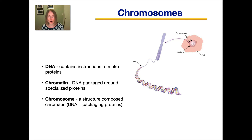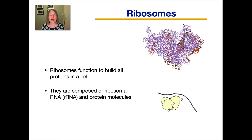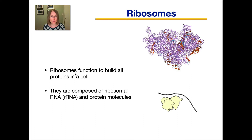So the DNA has to be packaged in a special way to fit into these tiny cells. The vocab word for this is chromatin — chromatin is when the DNA is packaged around specialized proteins. And a chromosome is a single structure composed of chromatin, the DNA and the packaging proteins. Ribosomes are special structures in all cells whose function is to build all the proteins in a cell. A ribosome is made up of molecules called ribosomal RNA, or rRNA, as well as proteins.